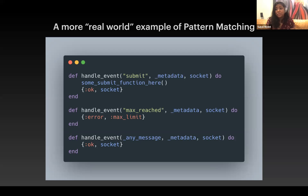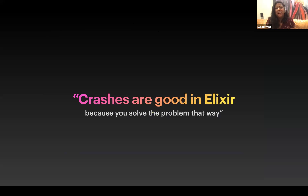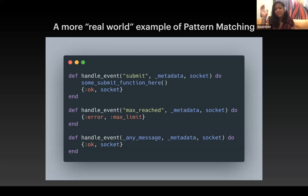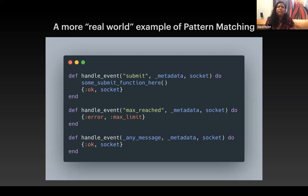If you didn't get submit or max-reached you'd land in the catch-all, so your application doesn't just crash when it finds something it can't handle. Crashes are actually good in Elixir — when your terminal shows errors it tells you immediately where your code has holes. Rather than defensive programming with not-not-not logic, you declare what you want in order from specific to general.